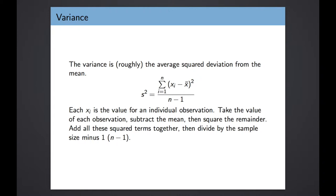For every observation we take the difference between that observation and the mean, then we square that value, and then we add up that squared value for every observation in our data set and divide by the sample size minus 1. When we calculate the mean we divide just by the sample size, but for a sample variance we divide by the sample size minus 1. This is a mathematical technicality — the reasons why we divide by n minus 1 are not really important for this class, but it is different from the formula for the mean and it's not an accident. So to reiterate, these are the squared distances of each observation from the mean, summed up and divided by the sample size minus 1, which gives us a number called the variance.